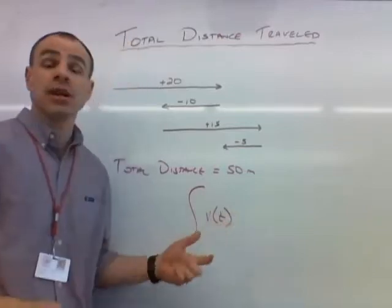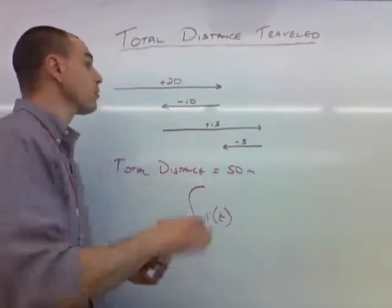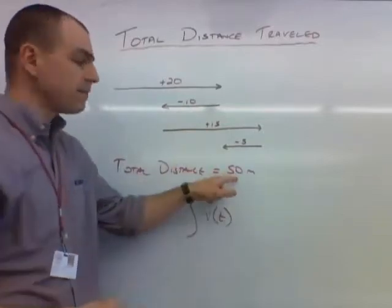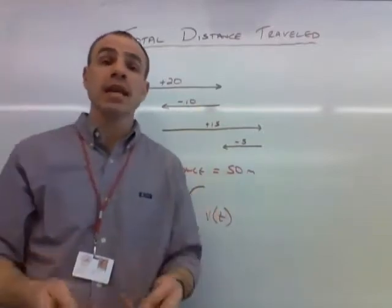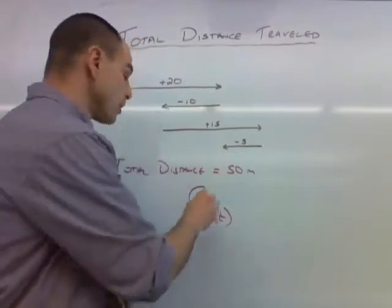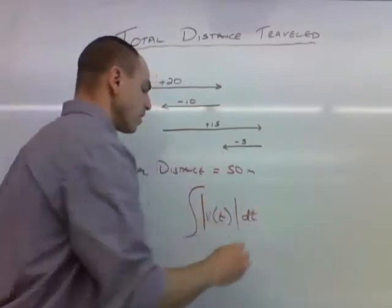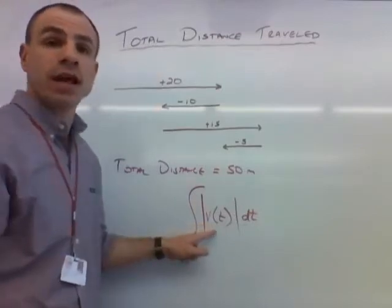that means that we're summing up all the velocity. Well, here's our velocities. We sum them all up, but we don't get the 50 unless we make the negative numbers positive. So we're going to bring in absolute value markers. So we have the absolute value of the velocity dt.